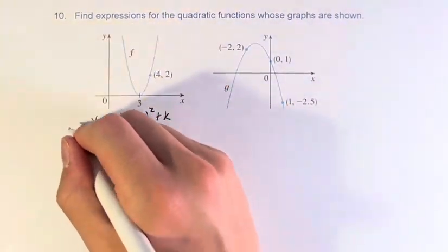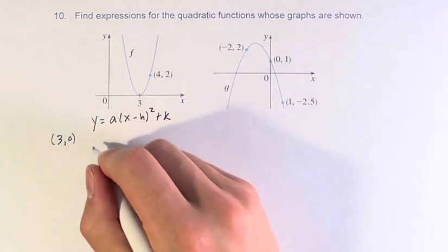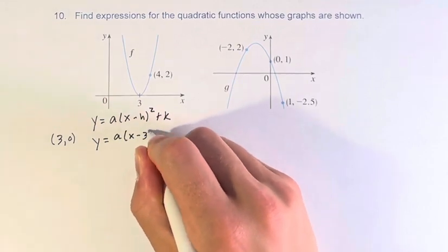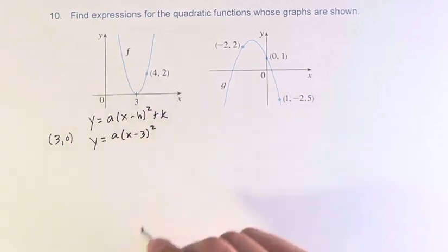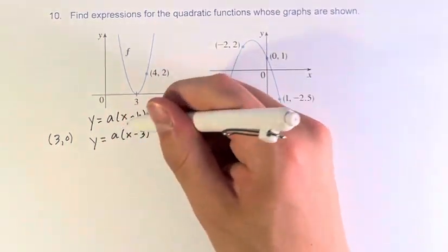So for the point (3, 0), this becomes y equals a times (x minus 3) squared plus 0, which I'm not even going to write. Now we can plug in this point that we know, (4, 2), to solve for a.